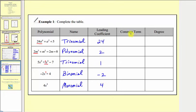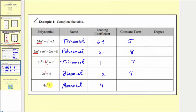Next, we find the constant term — the term that does not contain a variable factor. The constant term in the first polynomial is five. In the next polynomial it is negative eight, because of the subtraction. The constant term in the third is negative seven. In the fourth it is positive four. For the monomial, there appears to be no constant term, but we could write plus zero, where zero is a constant, so the constant term is zero.